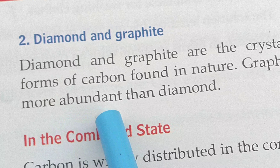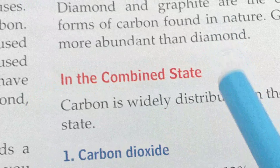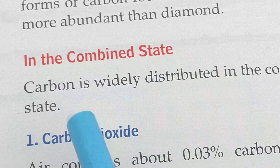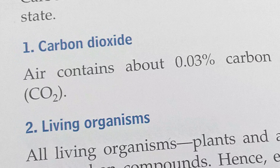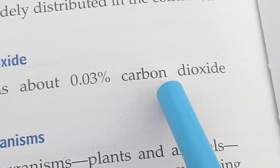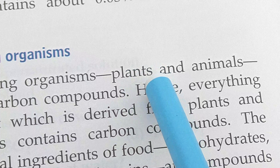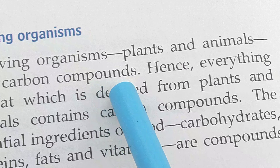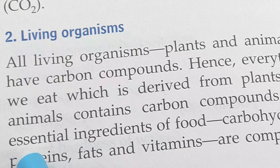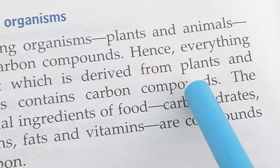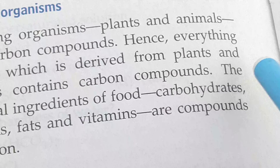In the combined state, carbon is widely distributed. Air contains about 0.03% carbon dioxide. All living organisms — plants and animals — have carbon compounds. Hence, everything we eat which is derived from plants and animals contains carbon compounds. The food we intake also consists of carbon compounds.